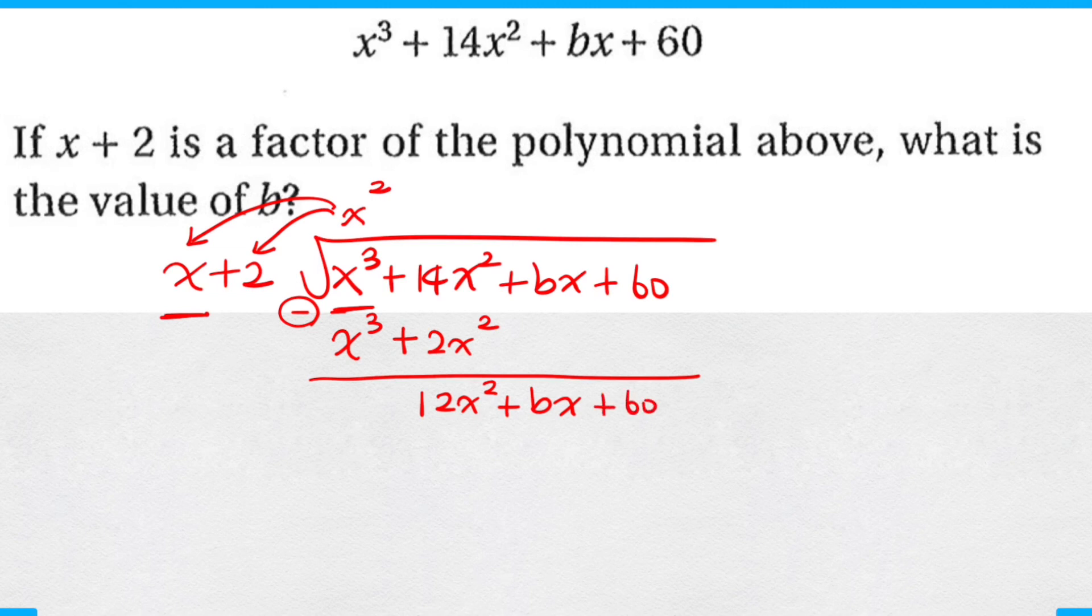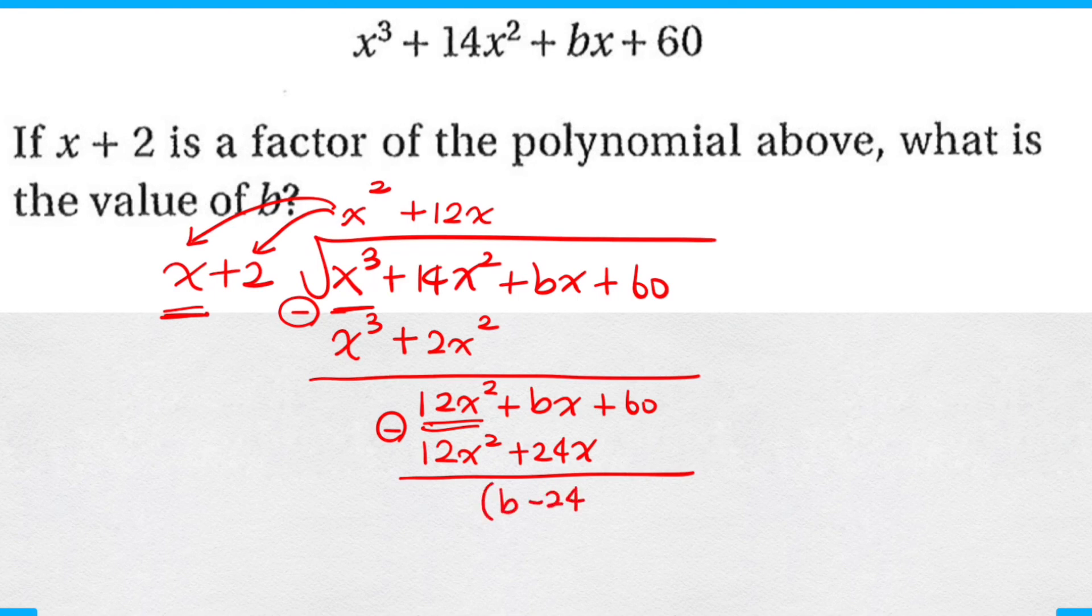Once again, try to match the first term of the polynomial with the first term of the factor. I must multiply by 12x in order to get 12x squared. Now when I distribute that to the positive 2, I get plus 24x. When I subtract, I get b minus 24 times x plus 60.